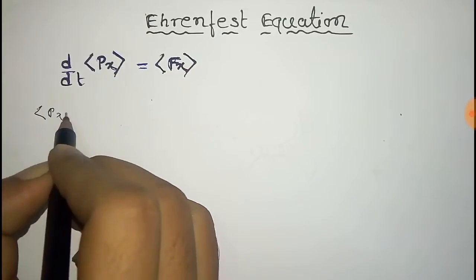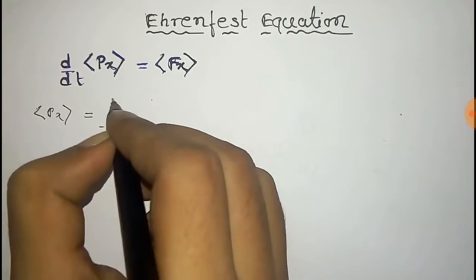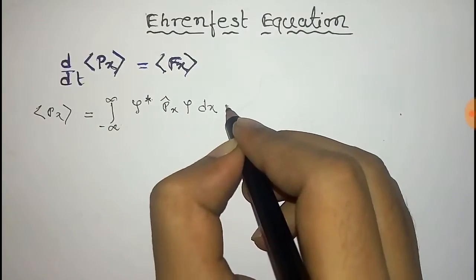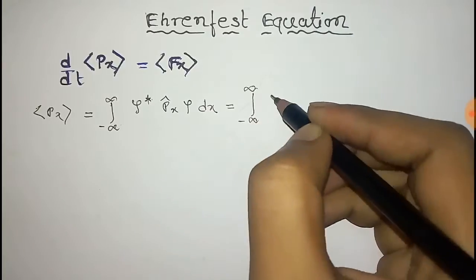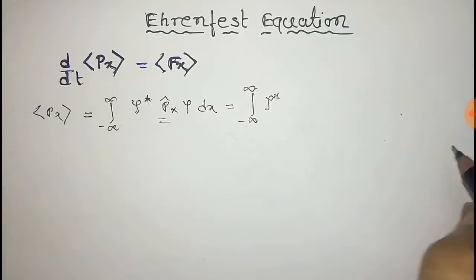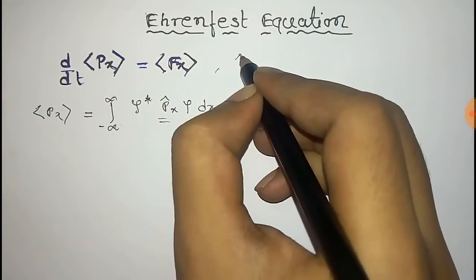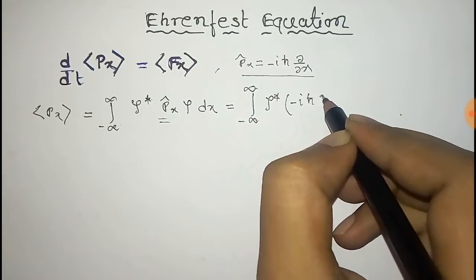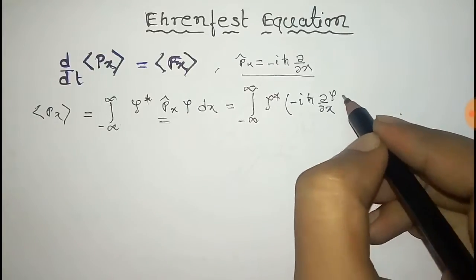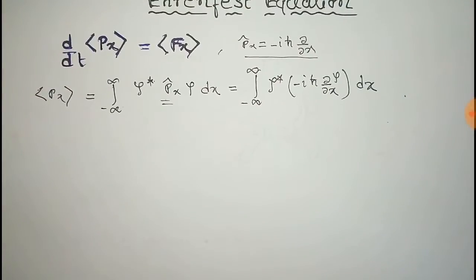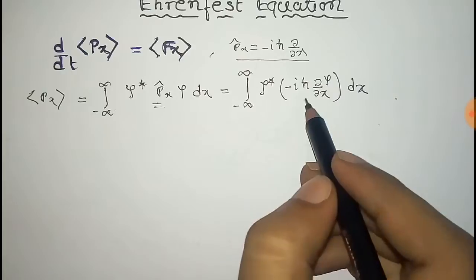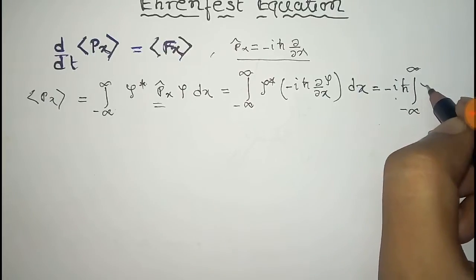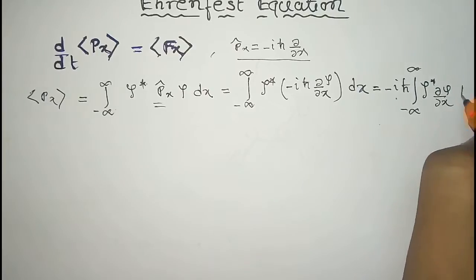The expectation value of linear momentum is equal to the integral from minus infinity to plus infinity of ψ* p_x-hat ψ dx. The value of the p_x operator is −iℏ ∂/∂x, so we substitute that in. iℏ is a constant and comes out, leaving the integral of ψ* (∂ψ/∂x) dx.